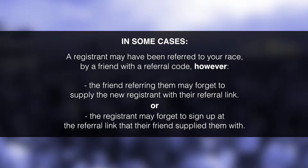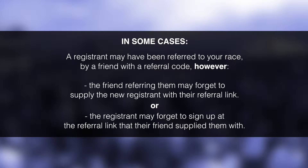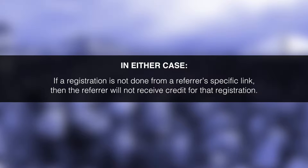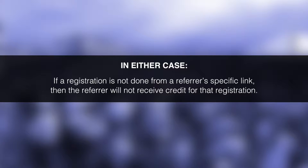In some cases, a new registrant may have been referred to your race by a friend with a referral code. However, the friend referring them may have forgotten to supply the new registrant with their referral link, or the new registrant may have forgotten to sign up at the referral link that their friend supplied to them. In either case, if the new registration is not done from the referrer's specific link, then the referrer will not receive credit for that registration.